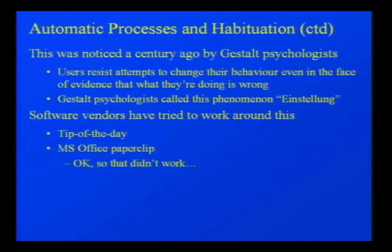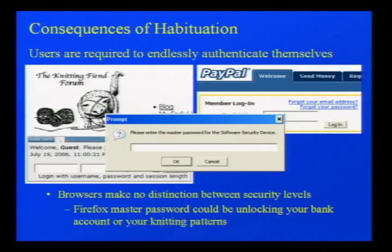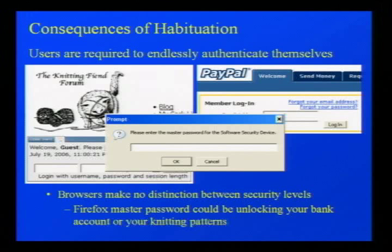Software vendors have tried to work around this — the most notorious example is the Microsoft Office paperclip: 'Hey, I noticed you're doing this in a really long-winded way; here are two keystrokes.' Users really hated it. A consequence is that every time you go online you have to endlessly authenticate yourself. In Firefox, whether it's a knitting blog or PayPal, you get the same authentication dialogue with no obvious difference in security level. When Firefox asks for the master password, you have no idea if it's high or low security. If you participate in 100 different blogs, every time a password dialogue pops up, you type in your password automatically — that's something phishers are taking advantage of.